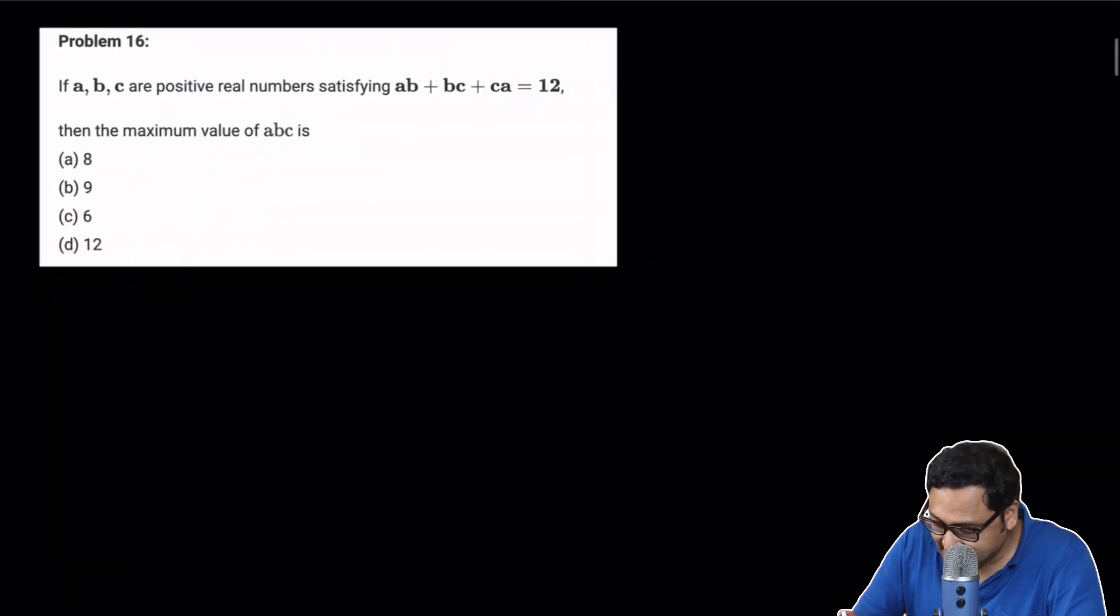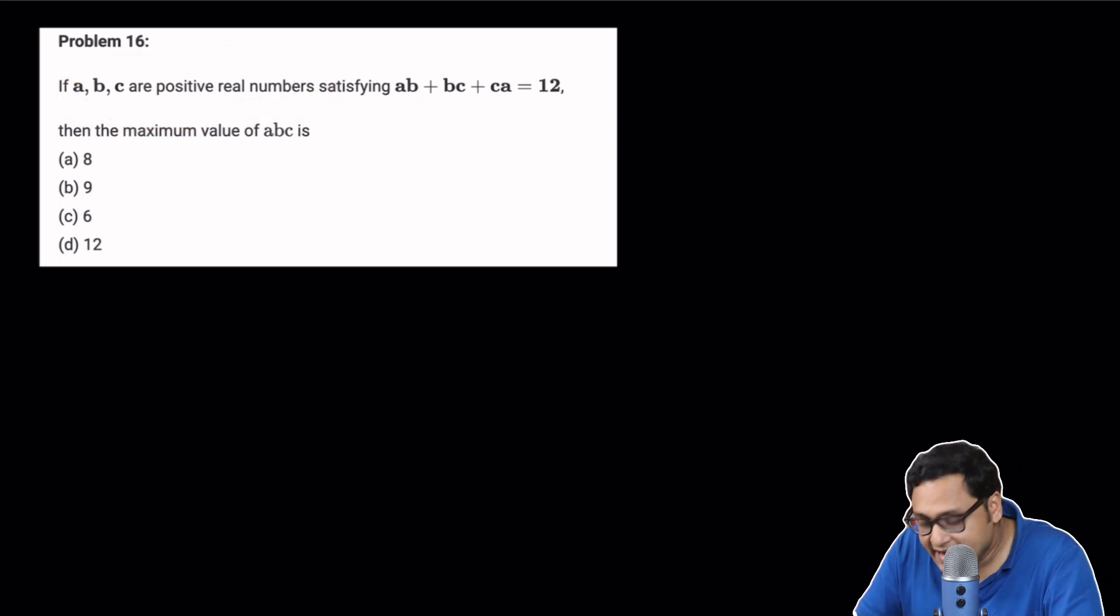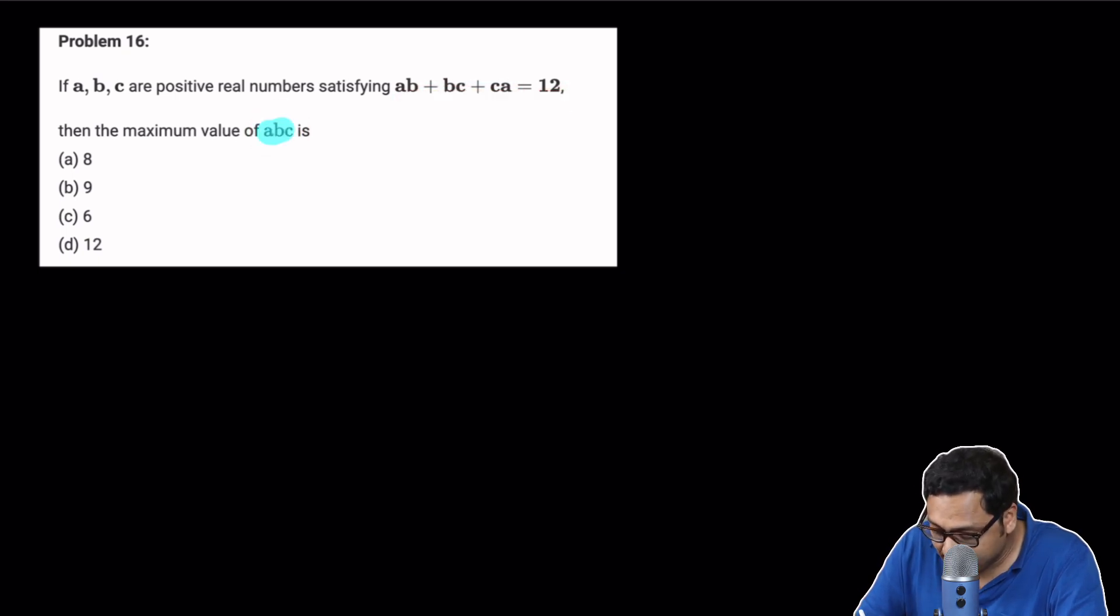The problem says that if ABC are positive real numbers satisfying AB plus BC plus CA equals 12, what is the maximum value of ABC, the product of the three numbers?